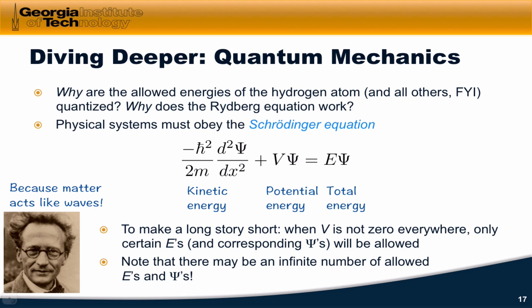when the potential is not zero everywhere, only certain energies and corresponding wave functions are actually solutions to Schrödinger's equation. And note that this may be an infinite set of possible size,